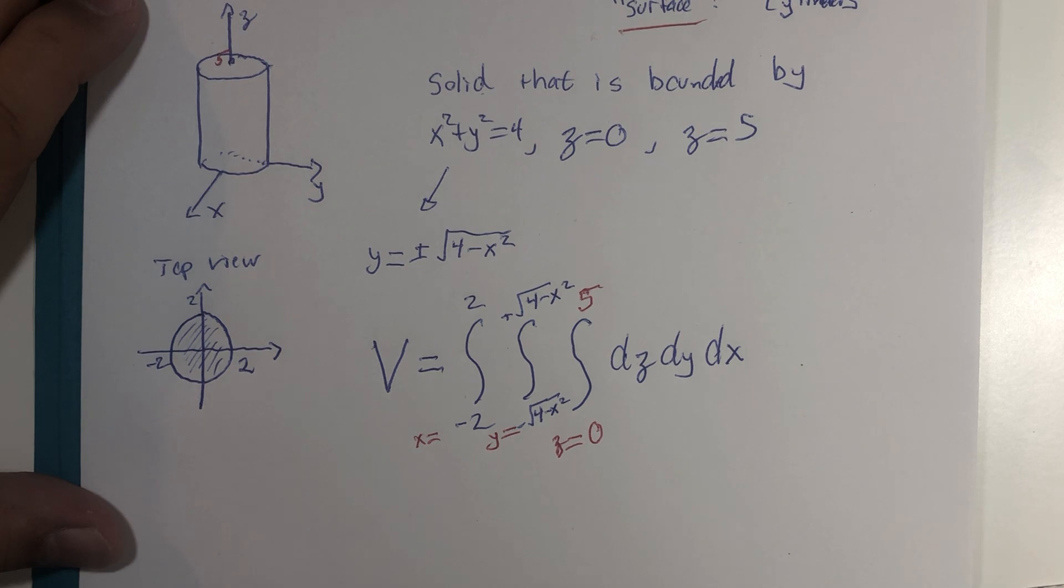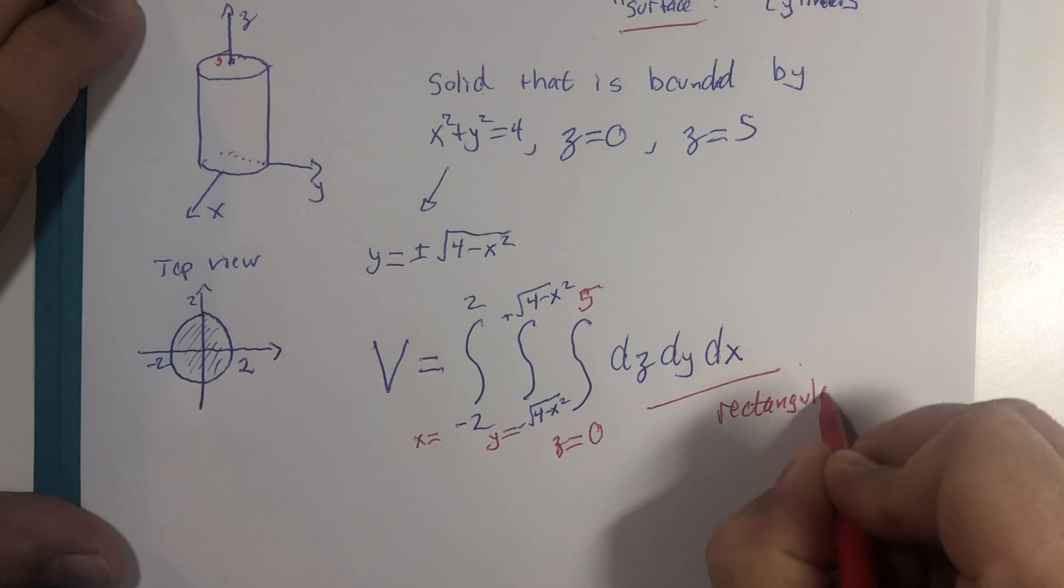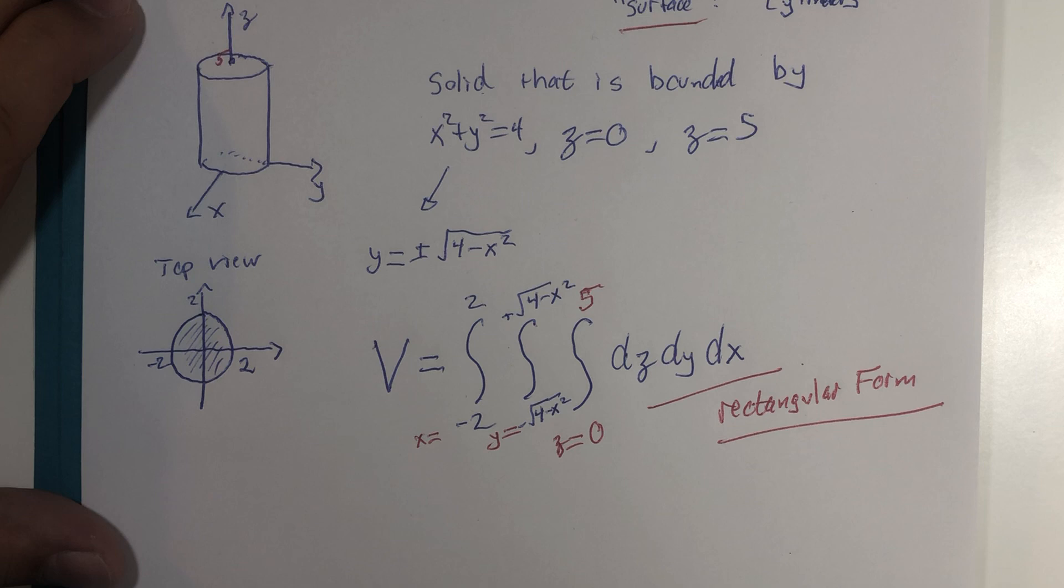Now, in this particular form, the integration is going to get into some at least trigonometric substitution from calc two, if you want to evaluate it all the way through. And this would be fully set up in rectangular form.